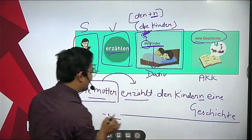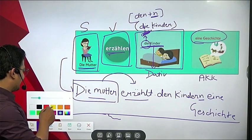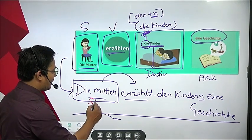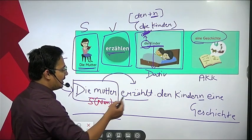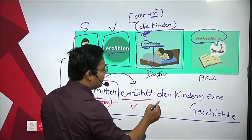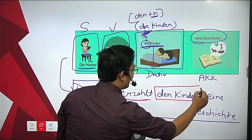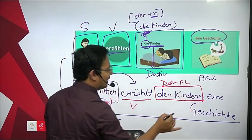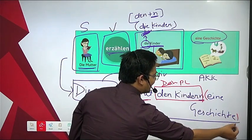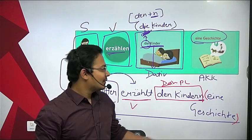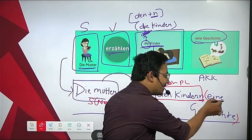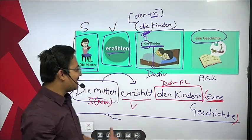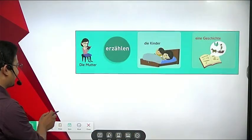So the complete sentence is: Die Mutter erzählt den Kindern eine Geschichte. Breakdown: 'Die Mutter' is the nominative (subject), 'erzählt' is the verb conjugated according to subject, 'den Kindern' is plural dative, and 'eine Geschichte' is accusative — 'eine' remains 'eine' in accusative. This shows clearly how the dative sentence is structured.